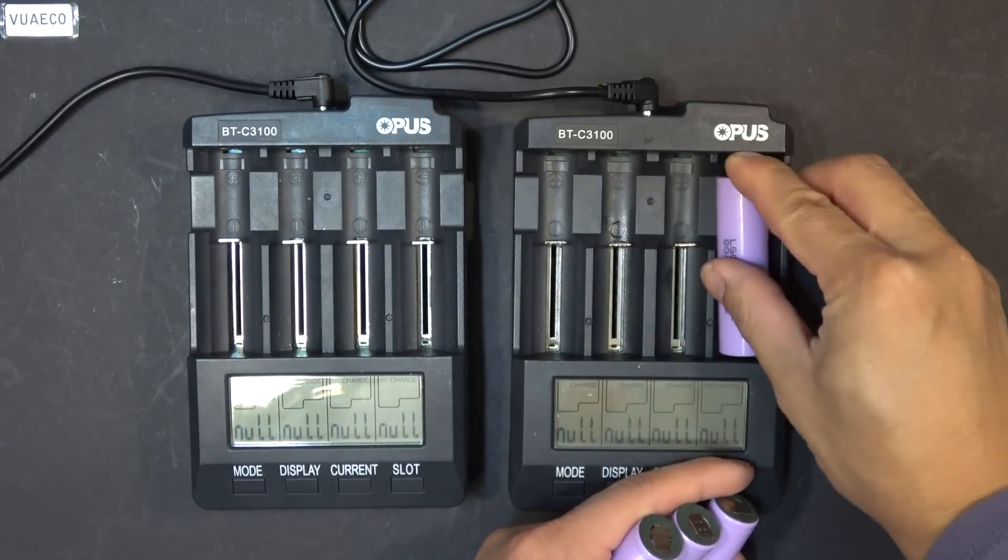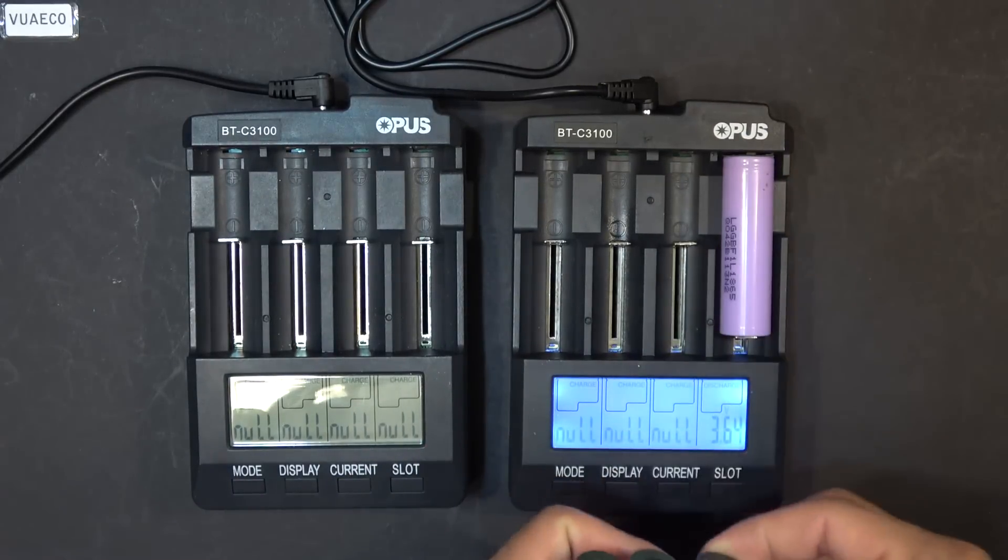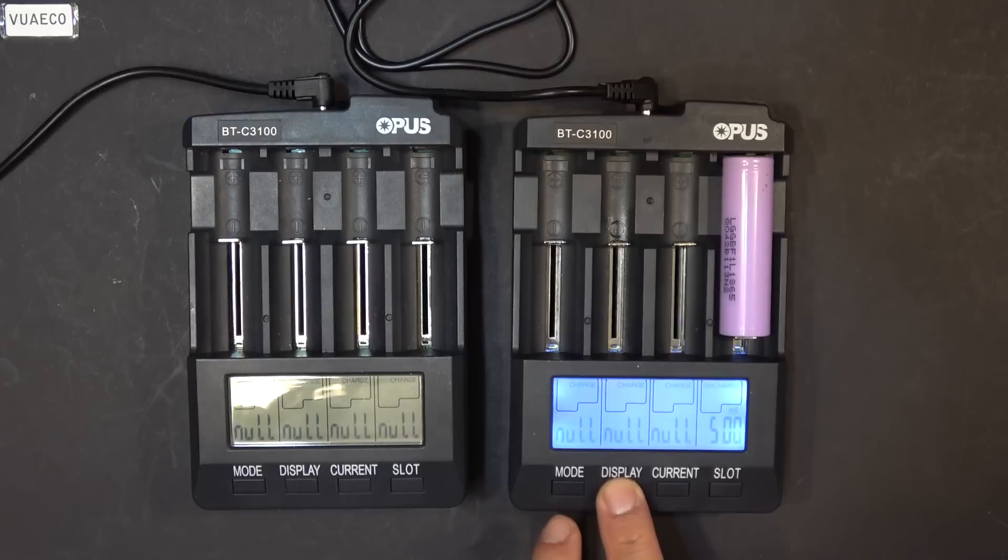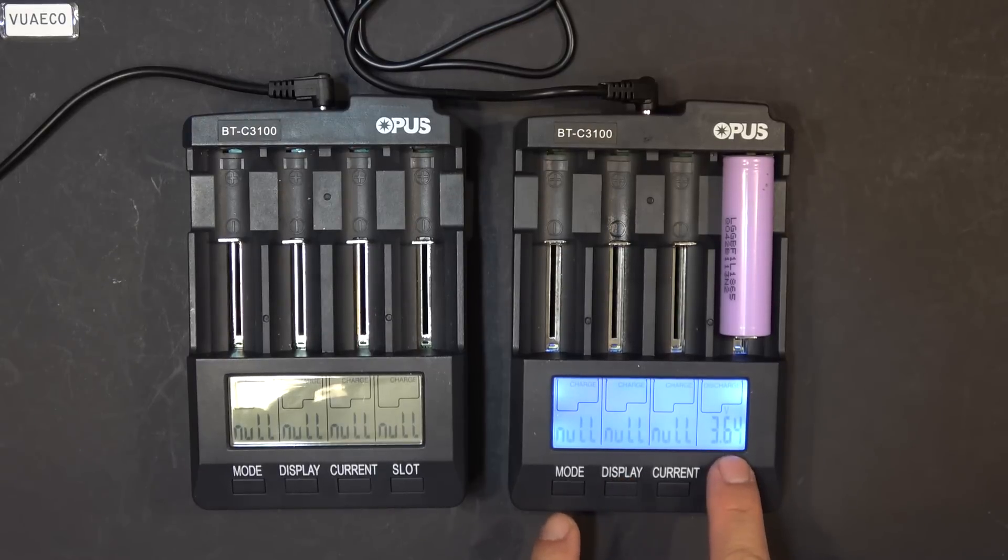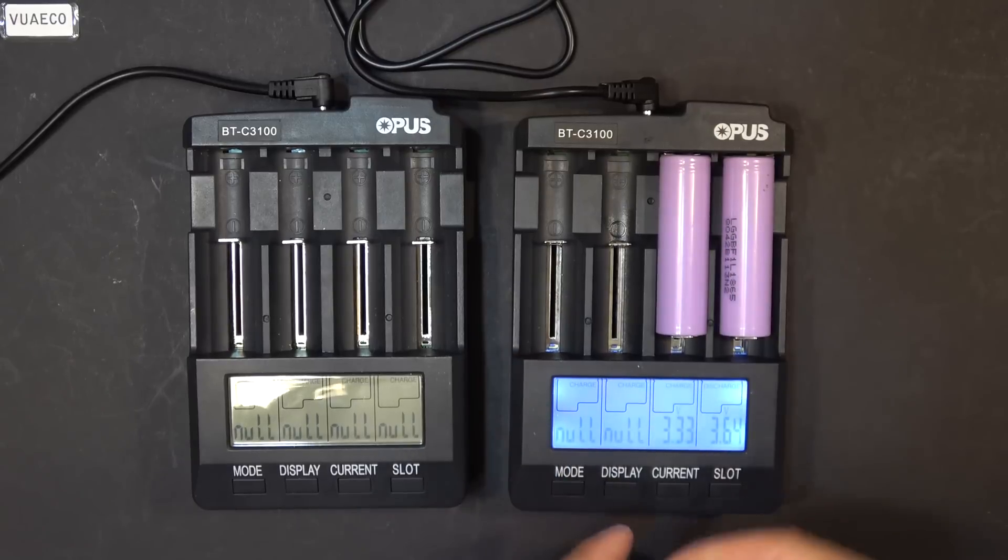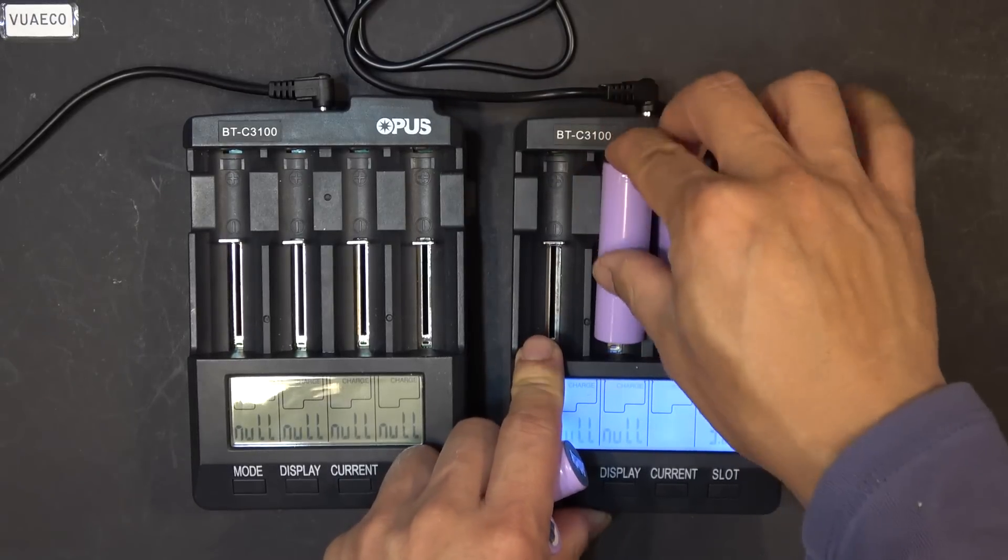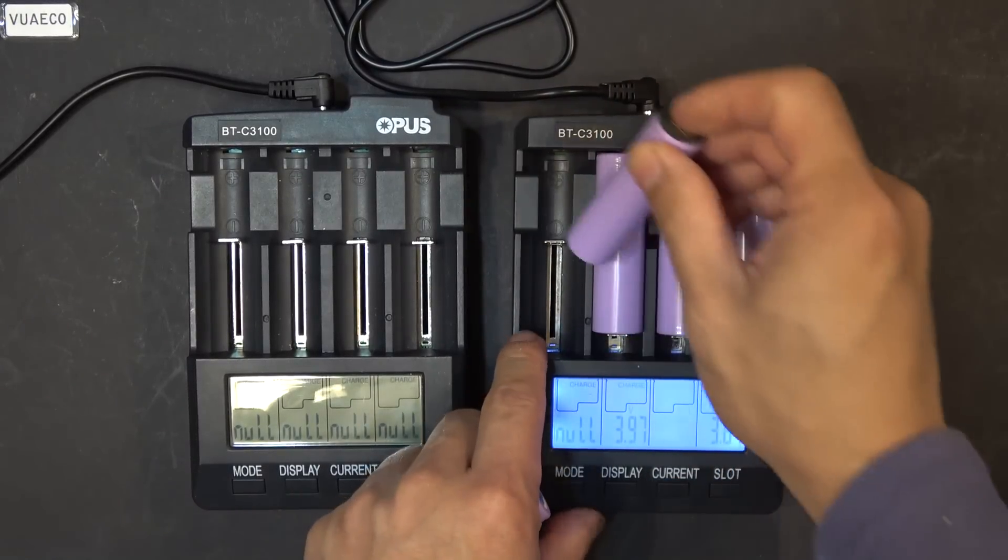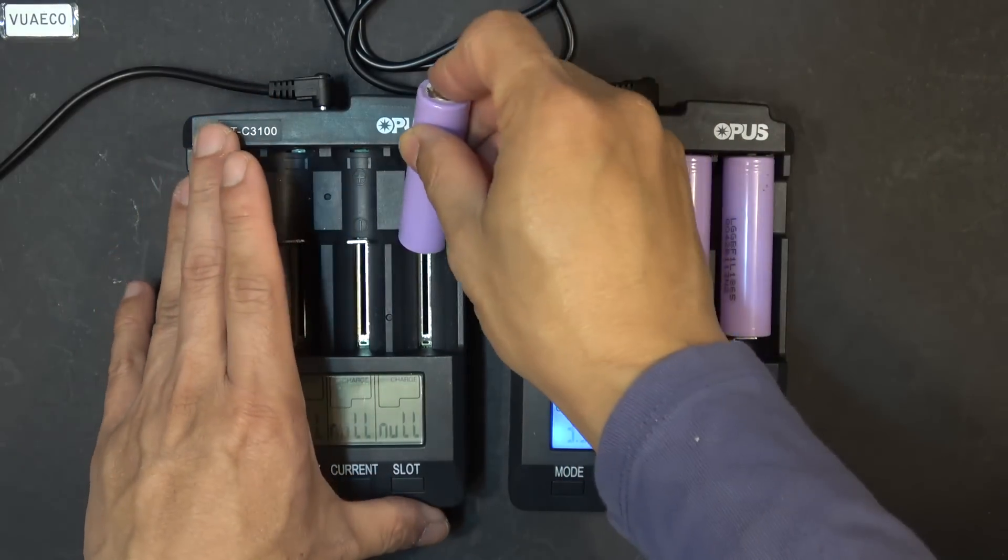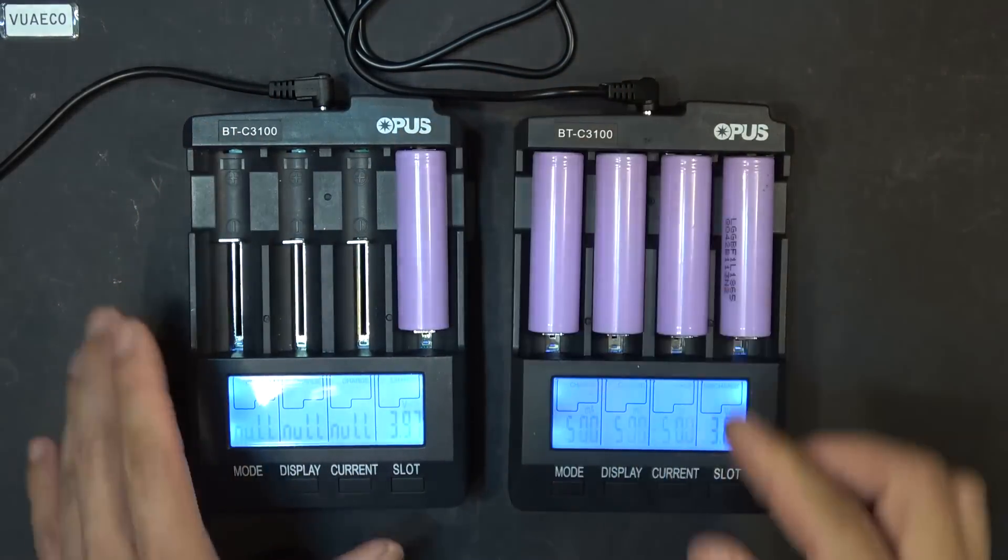So first, let's charge them first, because right now they are not full. This one here 3.6 volts, 3.64 volts. So I'm going to charge them first, and then after they're all full, I'm going to discharge them, and we can find out the capacity after we discharge them.